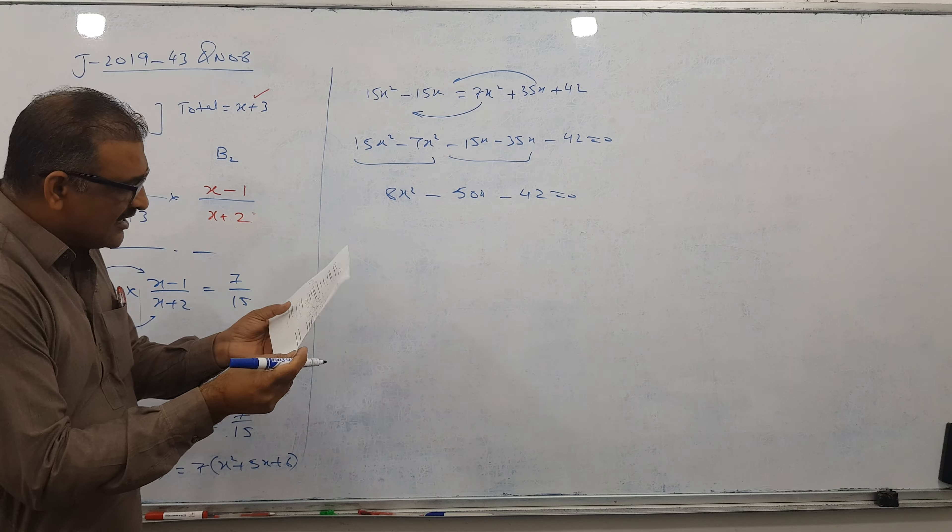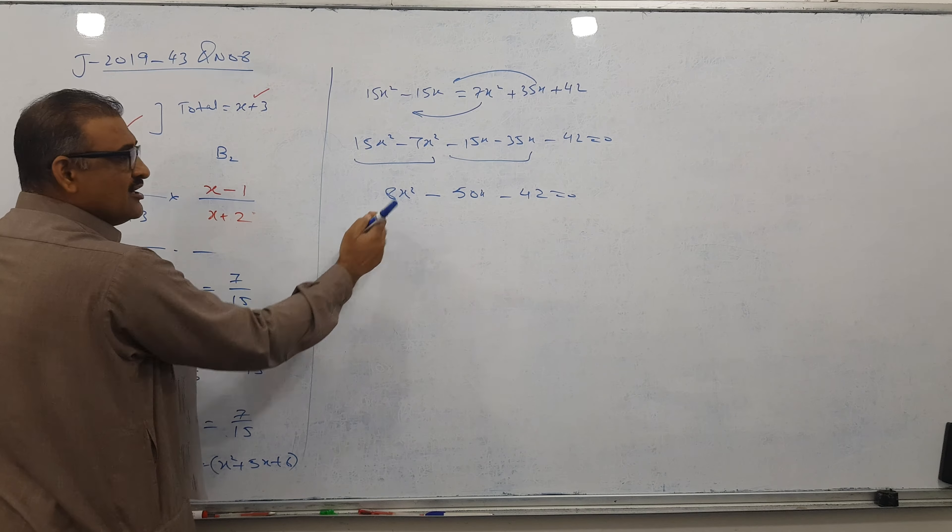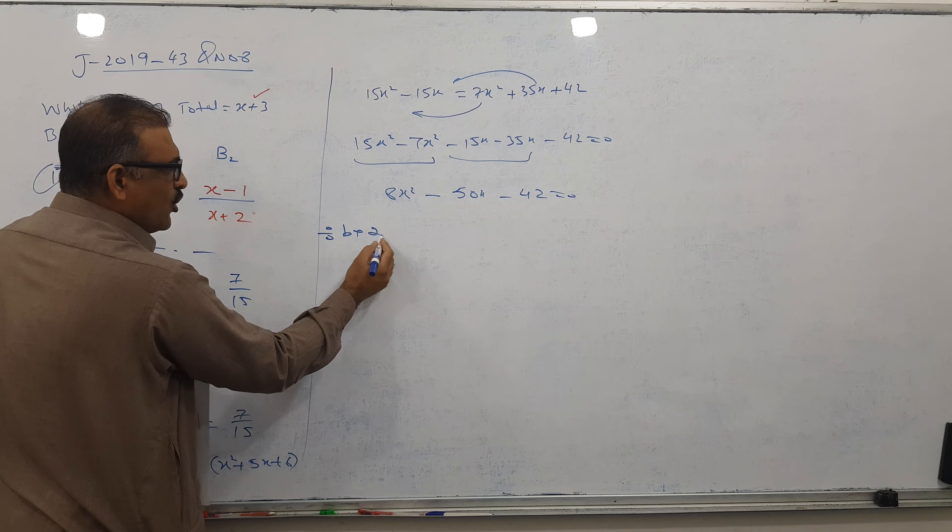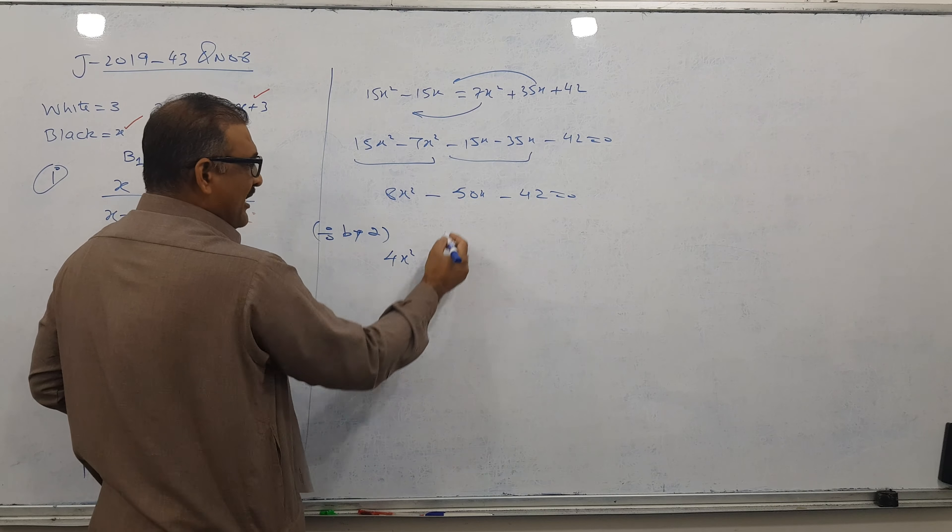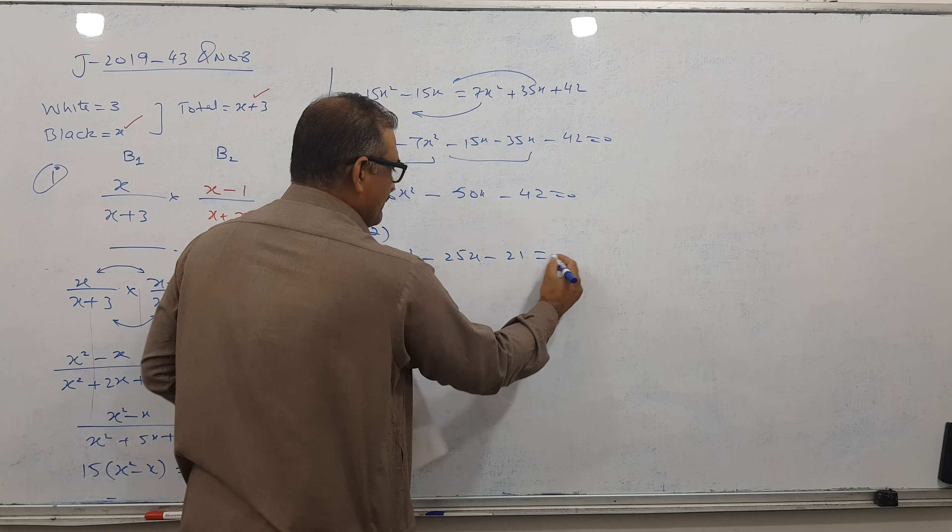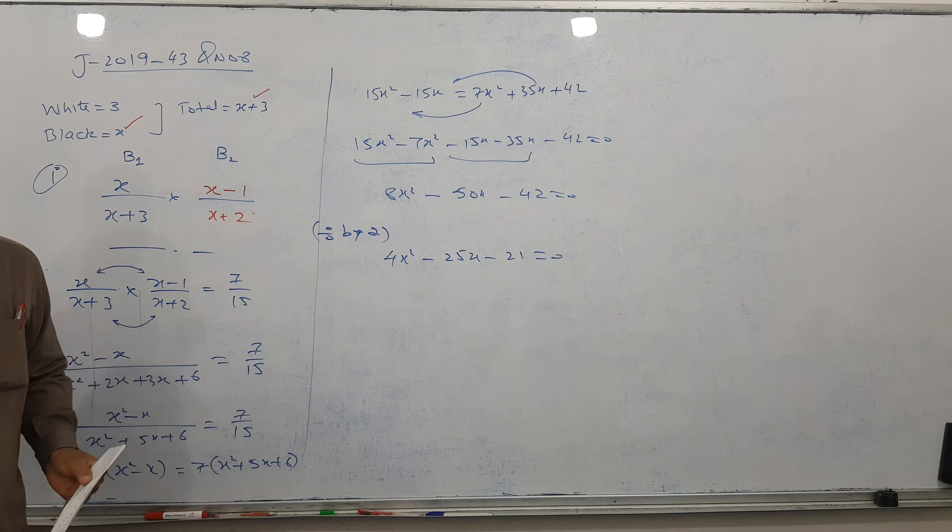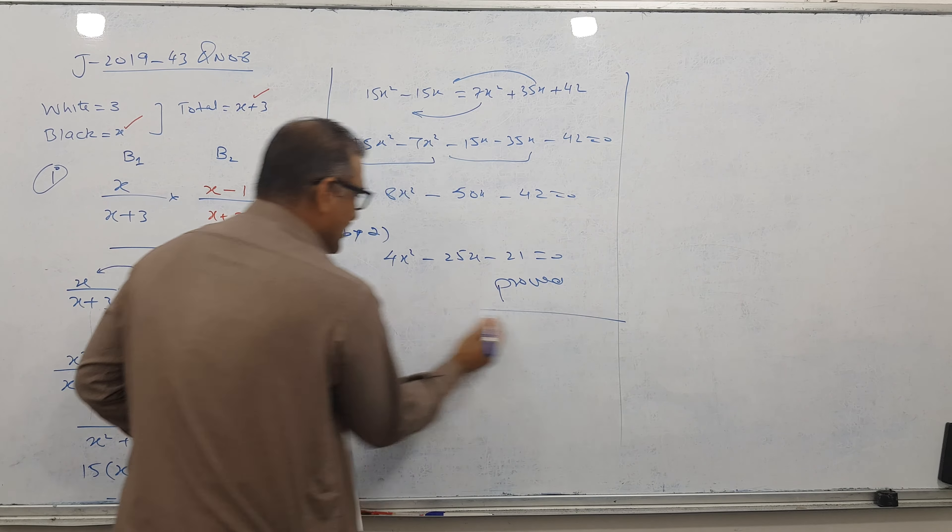Moving everything to one side: 15X squared minus 7X squared minus 15X minus 35X minus 42 equals 0. This gives 8X squared minus 50X minus 42 equals 0. Dividing by 2 we get 4X squared minus 25X minus 21 equals 0. So proved.